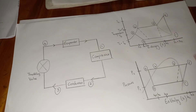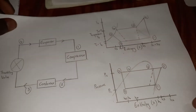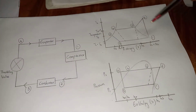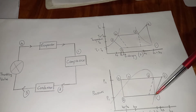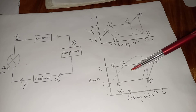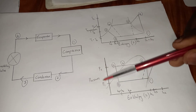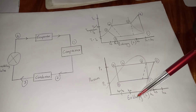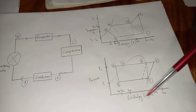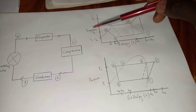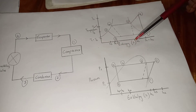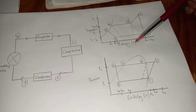We have two diagrams here. The first is the temperature-entropy (T-S) diagram, and the second is the pressure-enthalpy (P-H) diagram. On the P-H diagram, pressure is on one axis and enthalpy (h) is on the other. On the T-S diagram, temperature and entropy (s) are on the axes.